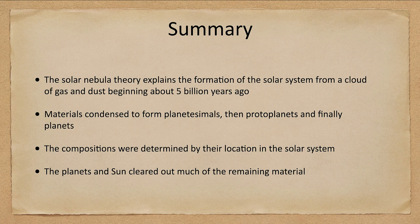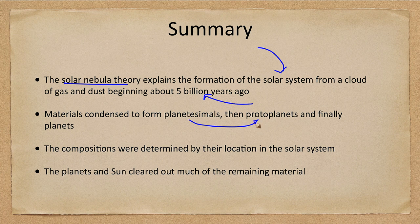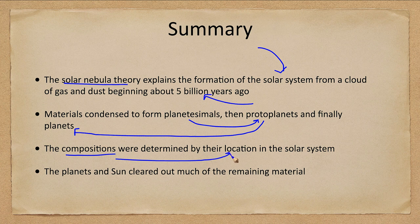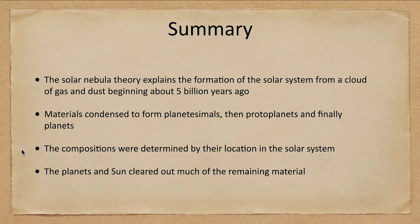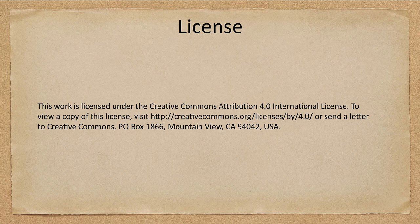In summary, the solar nebula theory explains the formation of our solar system from a cloud of gas and dust starting about 5 billion years ago. The material formed planetesimals, which became protoplanets, which finally became the planets we see today. Compositions were determined by location within the solar system, and the planets and the Sun worked together to clear out the remaining material. That concludes this lecture on formation of the solar system — we'll be back next time for another topic in astronomy.